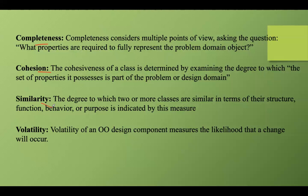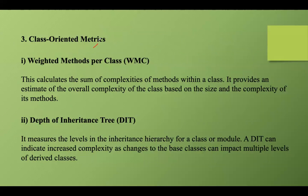The similarity metric assesses how similar classes are based on attributes and methods. High similarity may indicate opportunities for code reuse or refactoring into a base class. Volatility measures how changes in one class affect others — lower change propagation indicates a stable design, whereas higher values can indicate a fragile design. It also tracks the frequency and types of changes made to classes over time; higher volatility indicates areas that may require stabilization or refactoring.